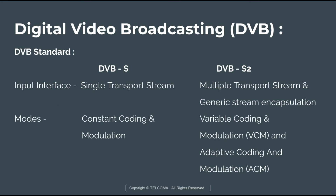Comparing DVB-S and DVB-S2: the first difference is the input interface. In DVB-S, the input interface is a single transport stream, whereas in DVB-S2 it supports multiple transport streams and Generic Stream Encapsulation. Regarding modes, DVB-S uses Constant Coding and Modulation (CCM), while DVB-S2 supports two modes: Variable Coding and Modulation (VCM) and Adaptive Coding and Modulation (ACM).